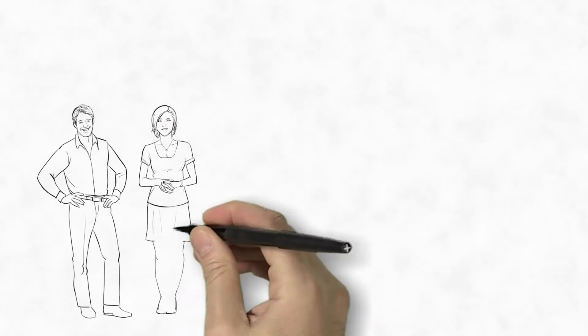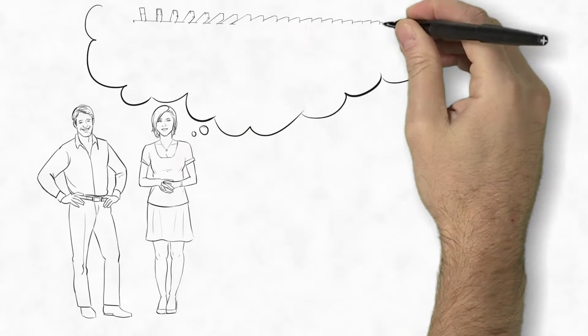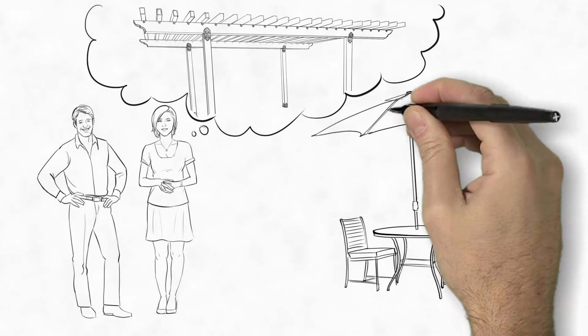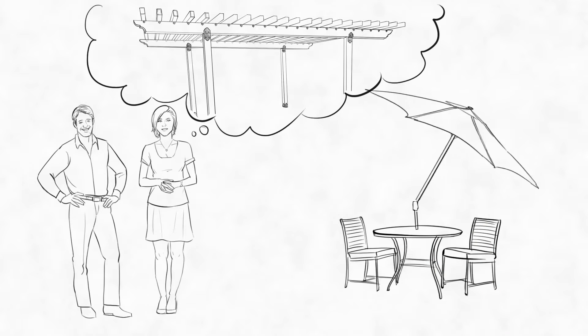This is Mark and Mary. Mary has always dreamed of building a pergola in their backyard, and now with Mark's boss coming over next month for a barbecue, the old umbrella table set on the patio isn't going to cut it.